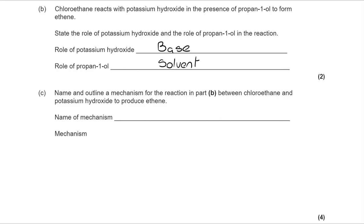We're then asked to name and outline a mechanism for the reaction in part B between chloroethane and potassium hydroxide to produce ethene. So name the mechanism and draw the mechanism. I would always on these draw the mechanism and then go back to name it because you can reason out the name rather than try to learn it as a fact.